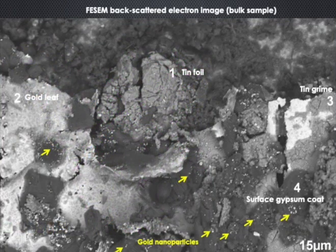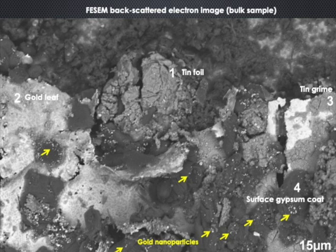Crater-shaped voids are frequent on the gilded tin. In voids, the gold leaf is worn away, exposing the tin foil. Corrosion compounds of the tin foil crept onto the gold leaf via these channels, forming the grime.